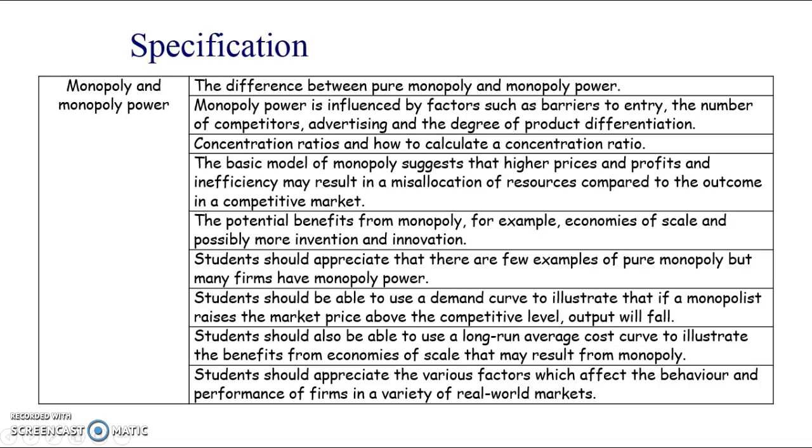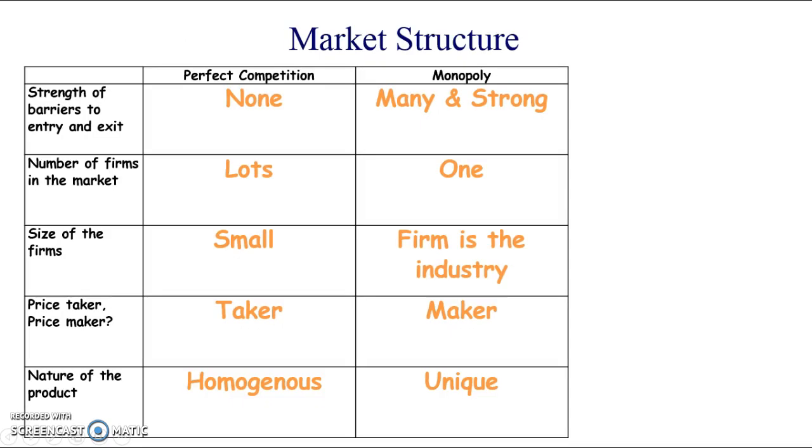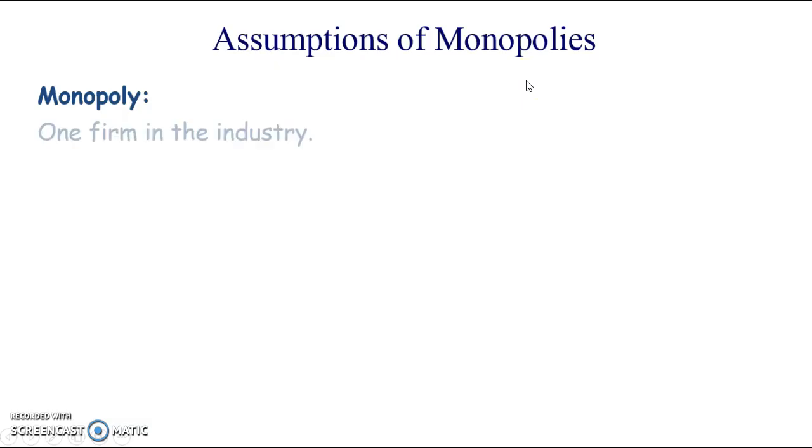So here are the specification objectives. It looks like a lot, but it's not that much actually. Here's a little recap of the differences between the two market structures. So we're very much going to be focusing on monopoly in this presentation. So monopoly is where there is one firm in the industry.